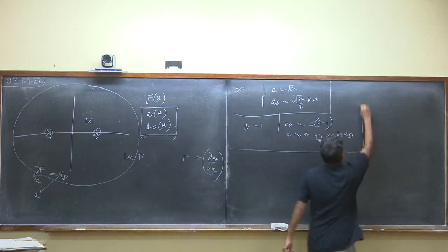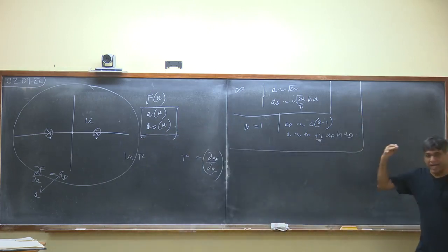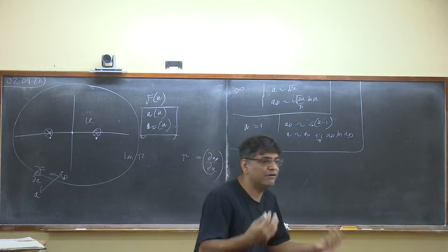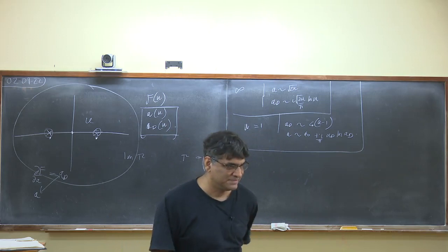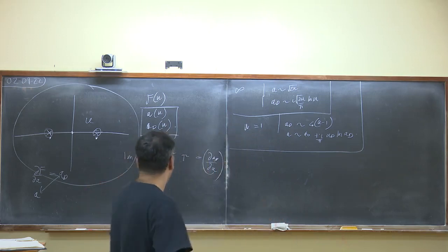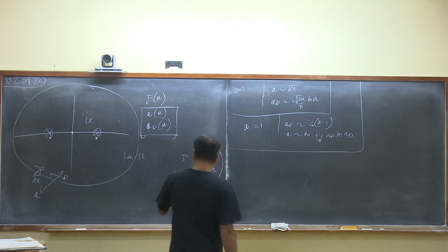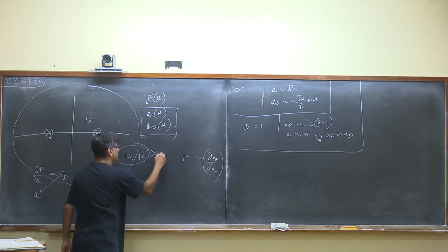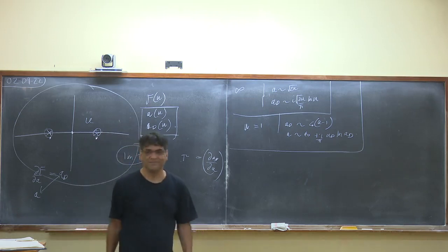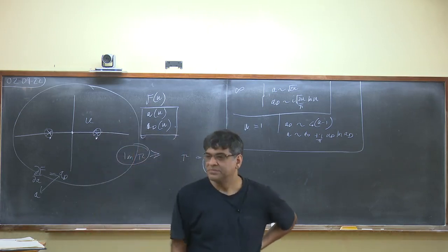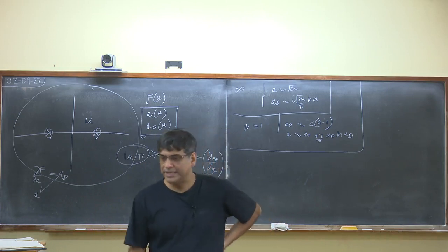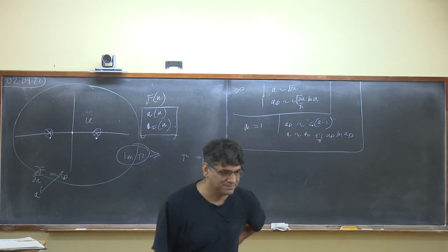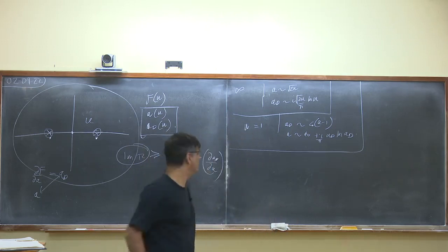We are now confronted with the issue of trying to find the prepotential — equivalently, trying to find A(U) and A_D(U) — with the requirement that the imaginary part of τ is always greater than or equal to zero. These people, being ingenious, thought up an ingenious method. They noted that there is a natural geometrical context in which you have τ with Im(τ) > 0, and that natural geometrical context involves a torus.